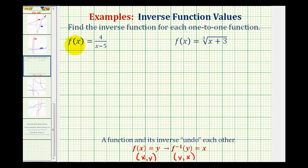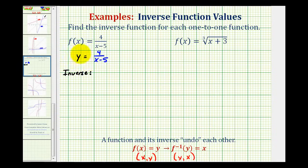First, we replace f(x) with y, writing the function as y = 4 divided by the quantity (x − 5). To find the inverse function, we interchange the x and y variables, giving us x = 4 divided by the quantity (y − 5). This is our inverse function, but we want to solve it for y and then replace y with inverse function notation.